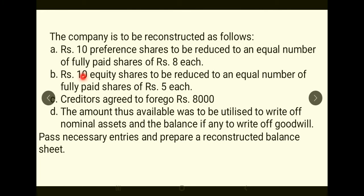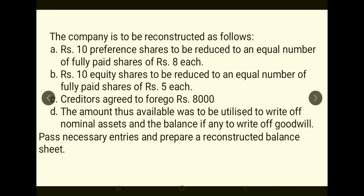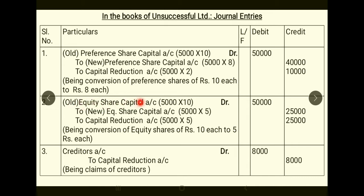Adjustment 2: Equity Shares of Rs.10 each are to be reduced to an equal number of fully paid shares of Rs.5 each. Journal entry: Old Equity Share Capital — 5,000 × Rs.10 = Rs.50,000; to New Equity Share Capital — 5,000 × Rs.5 = Rs.25,000; and to Capital Reduction Account — Rs.25,000 (the benefit of Rs.5 per share × 5,000 shares).